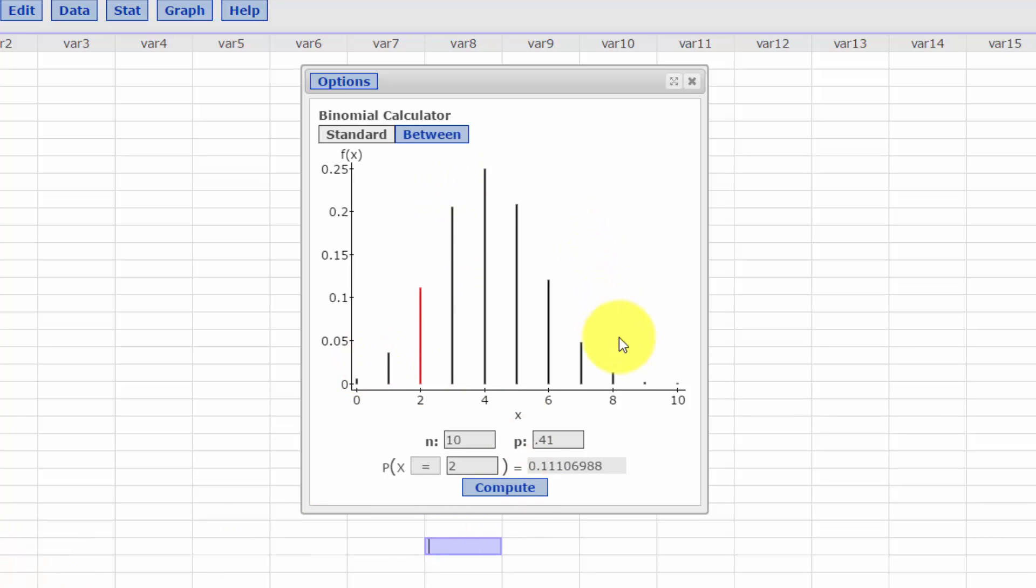You get this nice histogram there with the red bar showing. On this binomial, exactly two comes up to 11%, and that's what it gives us down here: 0.1111 for exactly two.